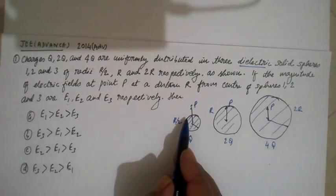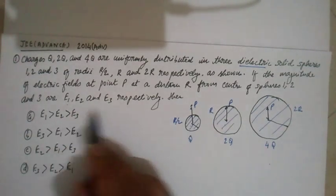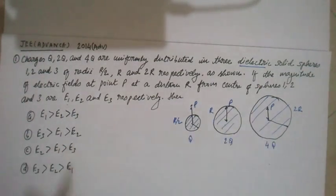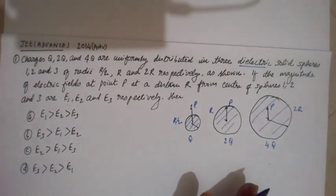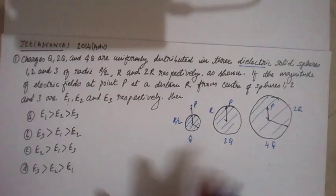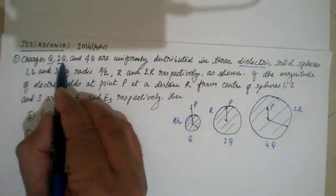Now we have to compare which electric field is stronger. So for a solid sphere we will see the expression for electric field in all these cases. The charges are Q, 2Q, and 4Q.